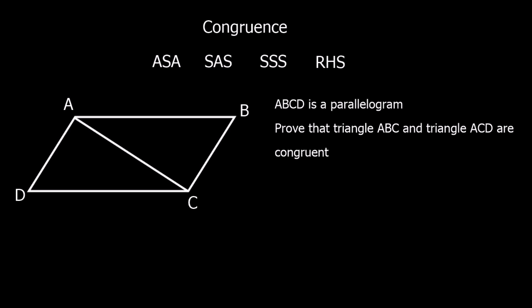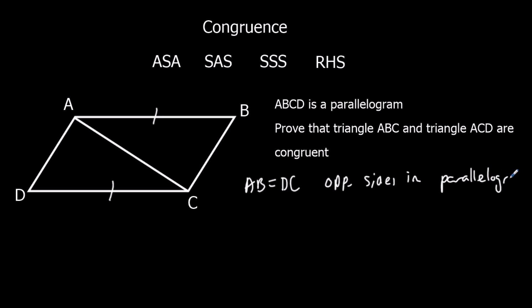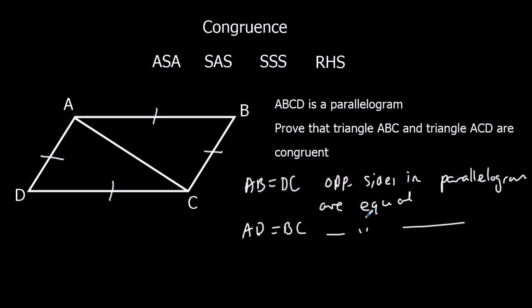Here's another question: ABCD is a parallelogram. Prove that triangle ABC and triangle ACD are congruent. To do this we use properties of parallelograms. We can say AB equals DC because they are opposite sides in a parallelogram, and opposite sides in a parallelogram are equal. Similarly, AD equals BC for the same reason.